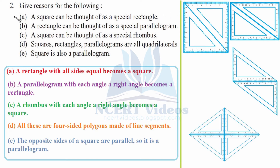Part B - a rectangle can be thought of as a special parallelogram. In a rectangle every angle is 90 degrees, whereas in a parallelogram it is not necessarily so. But if we compress a parallelogram to change its angles to 90 degrees, it becomes a rectangle. Because a rectangle holds true for the definition of parallelogram, it is a special form of parallelogram.